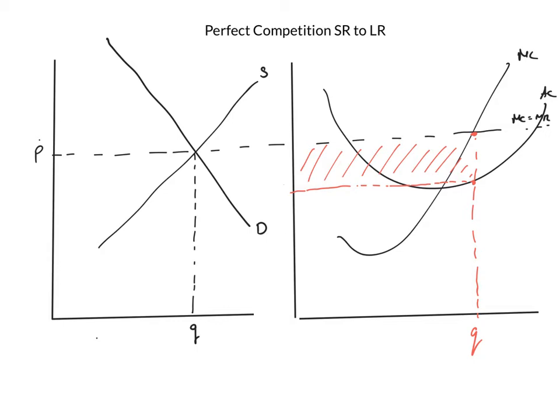Because there's supernormal profit, new firms are going to enter. And we can show that on the right-hand side, there's an outward shift. Actually worked pretty well. There's an outward shift of supply. So on the market, on the left-hand side, we can see that's going to reduce the price.